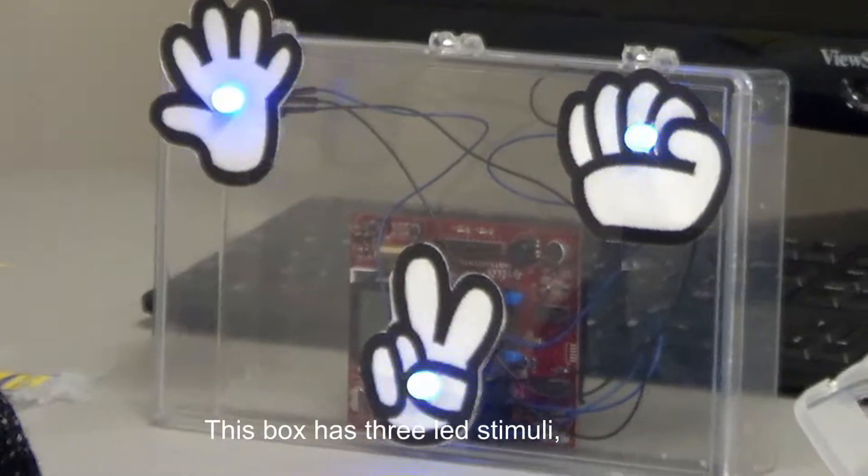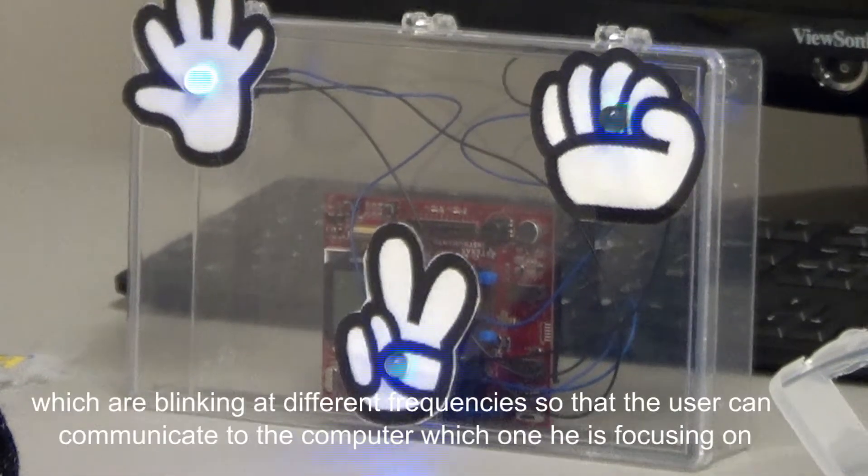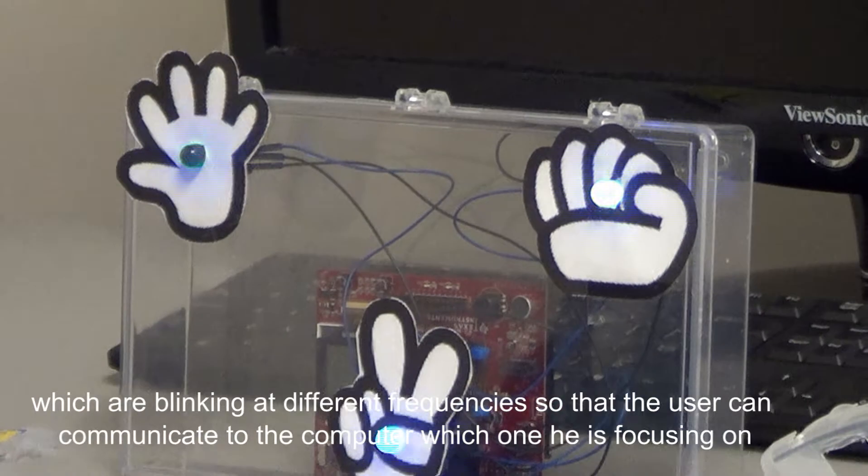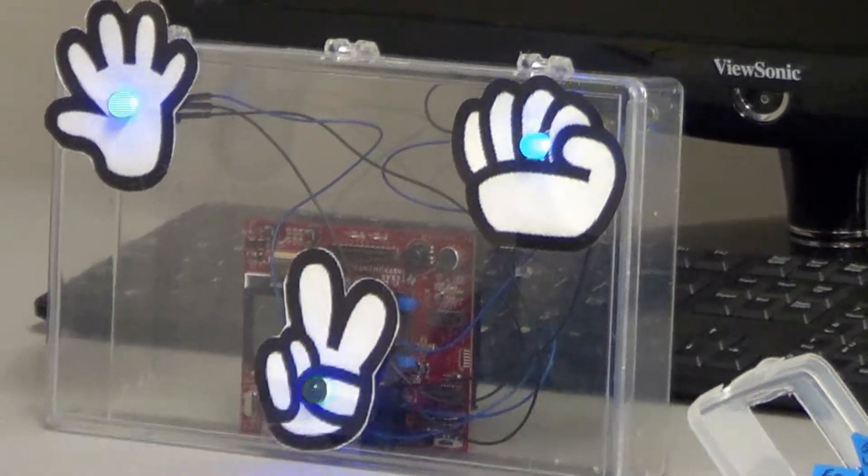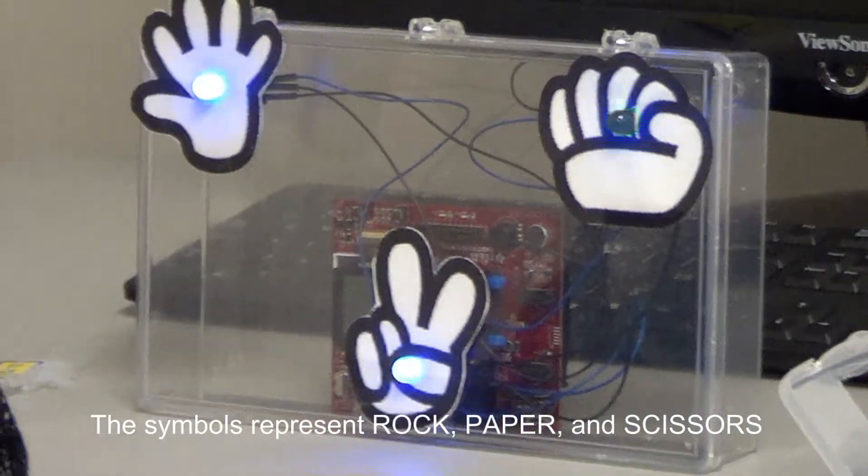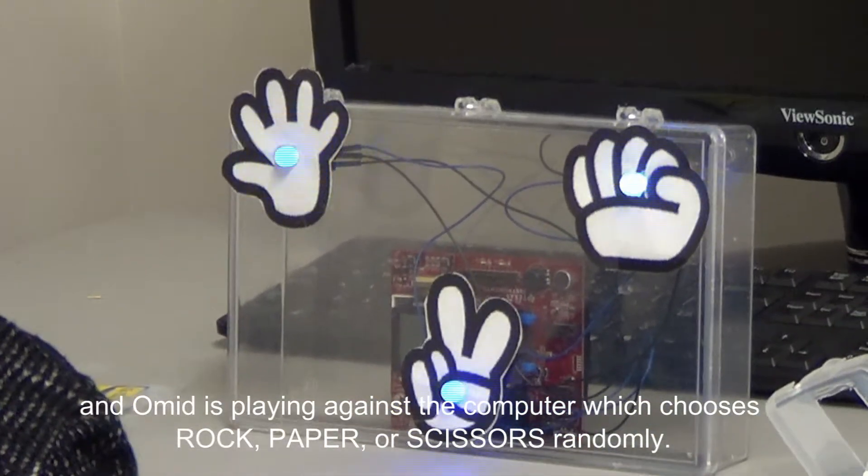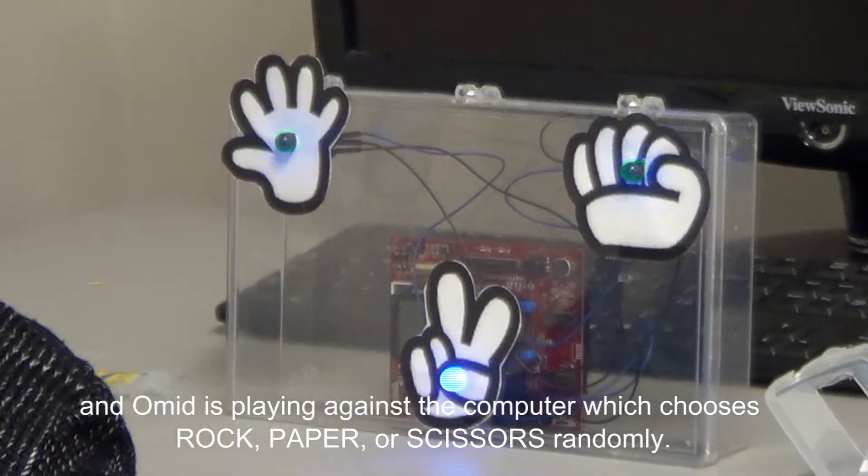This box has three LED stimuli, which are blinking at different frequencies so that the user can communicate to the computer which one he is focusing on. The symbols represent rock, paper, and scissors. And Amid is playing against the computer, which chooses rock, paper, or scissors randomly.